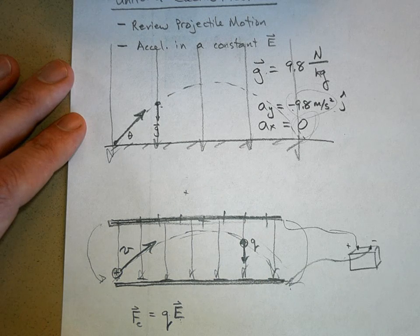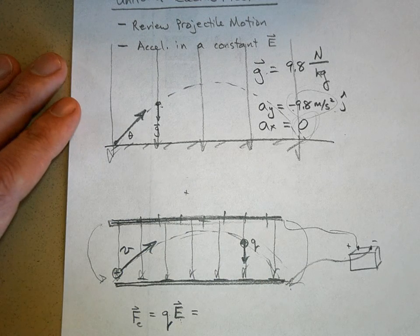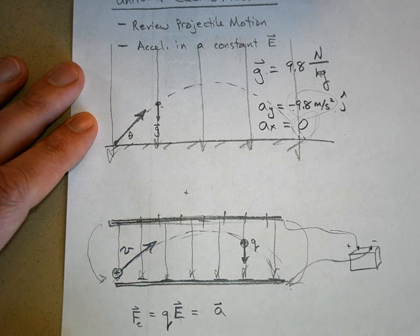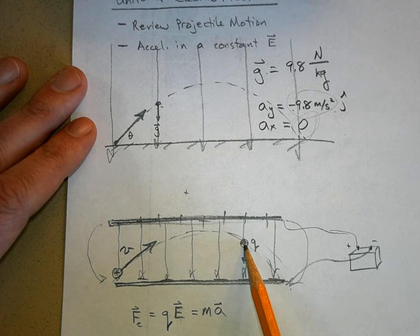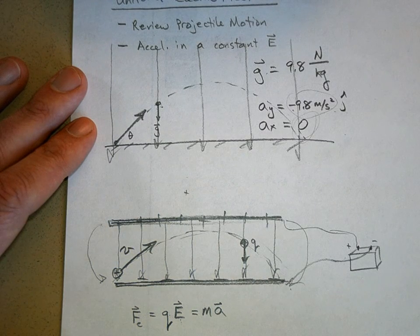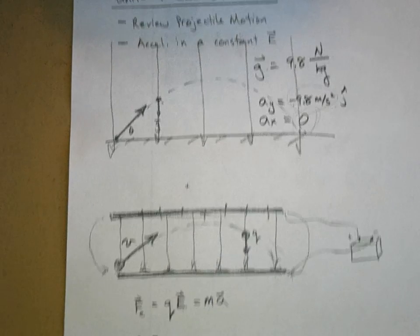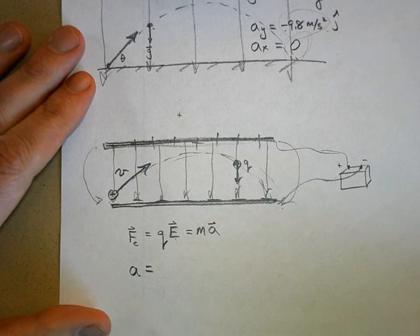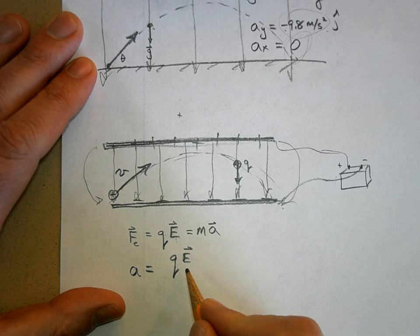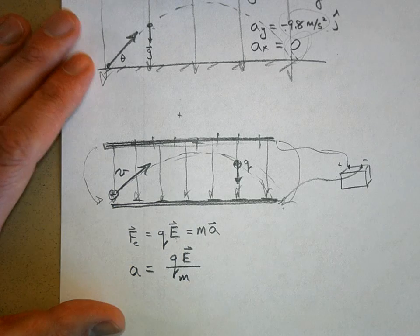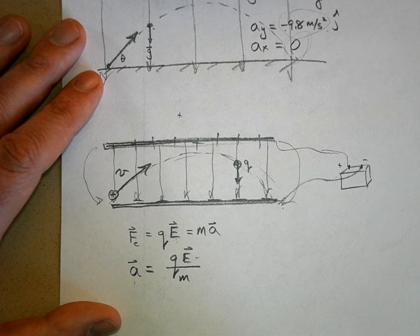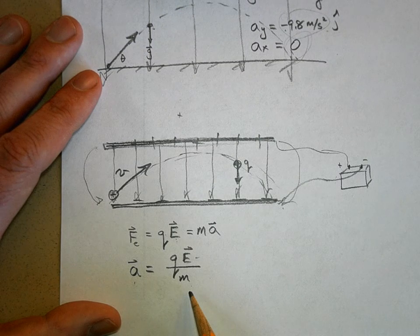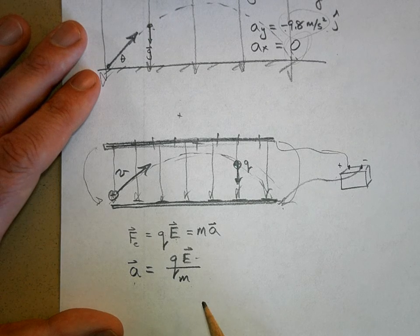We say this electric force is the net force. By Newton's law, it will cause the object to accelerate, and that acceleration depends on the object's mass. So the acceleration equals the charge times the electric field - giving the net force - divided by the mass. The direction of acceleration is the same as the electric field direction, unless the charge is negative, in which case it goes in the opposite direction. There's no such thing as negative mass, but there is positive and negative charge.